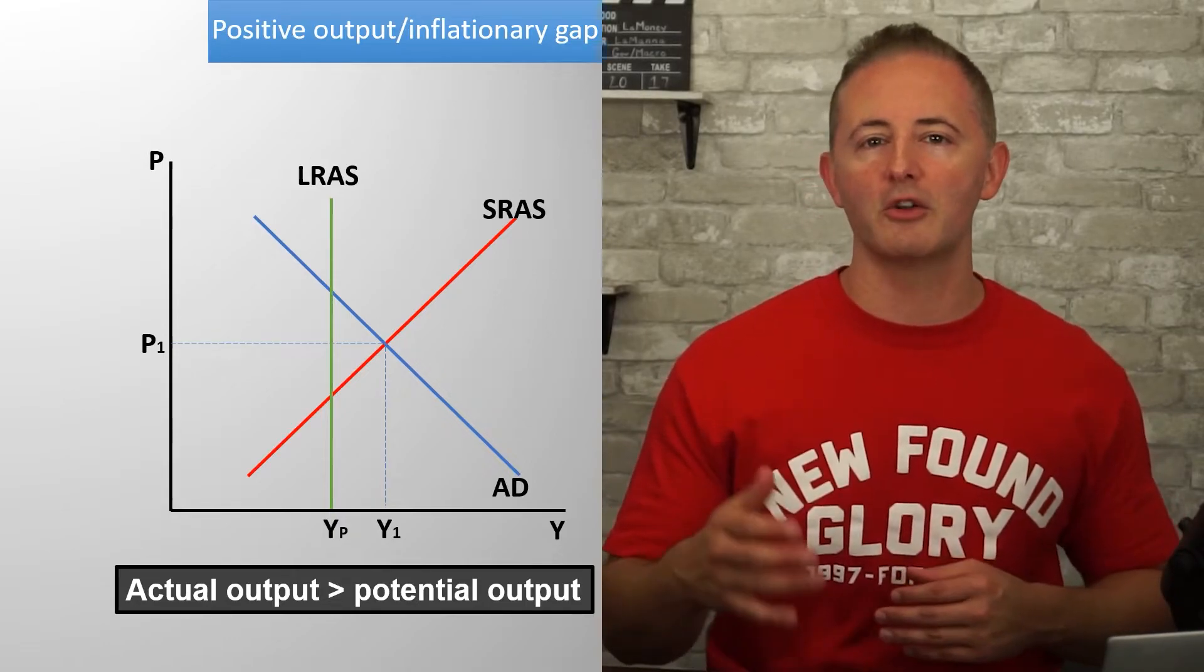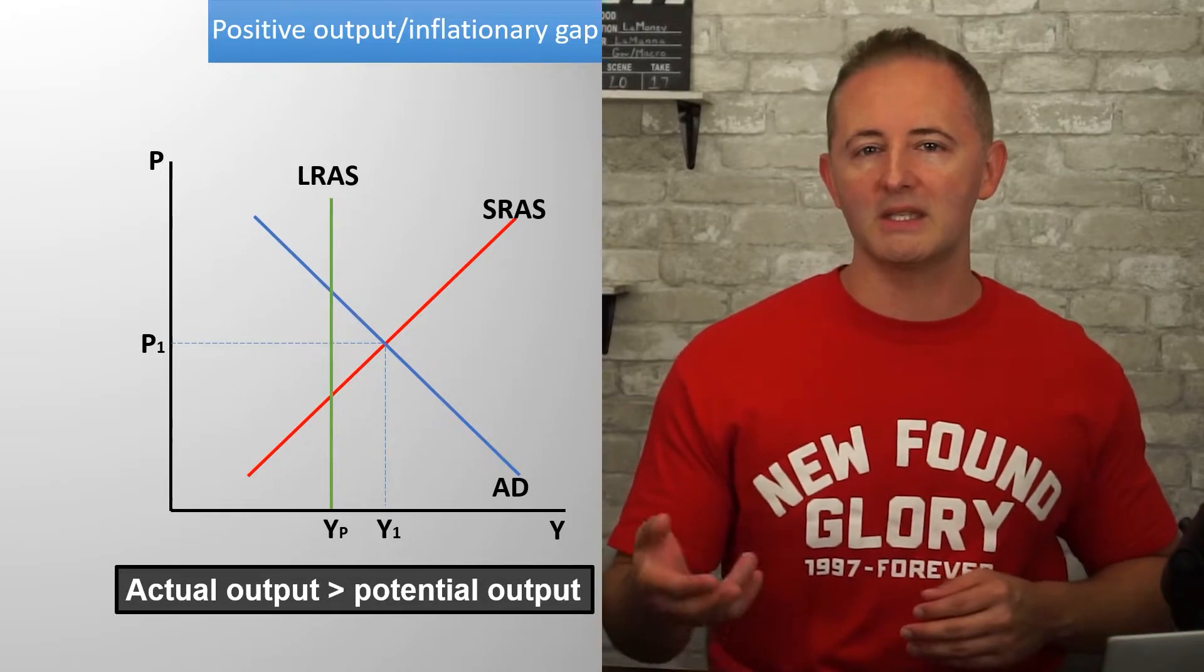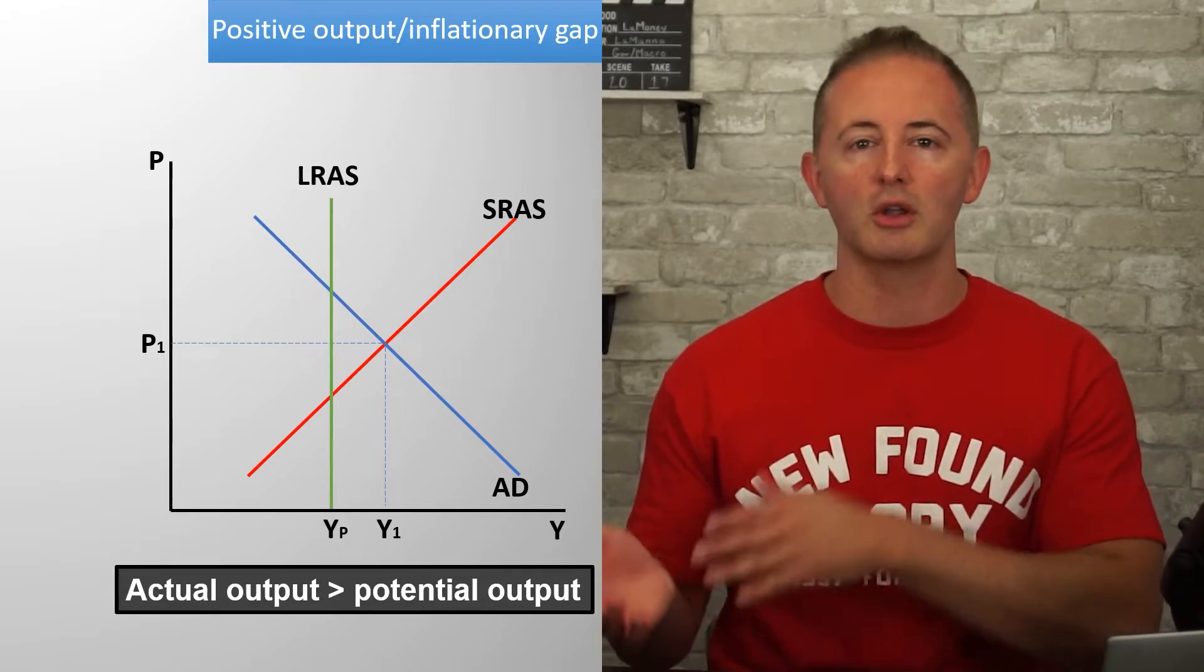This way output can be greater than potential output, but only temporarily, only in the short run. In video 3.7, we'll get into the specific way the economy transitions from the short to the long run.